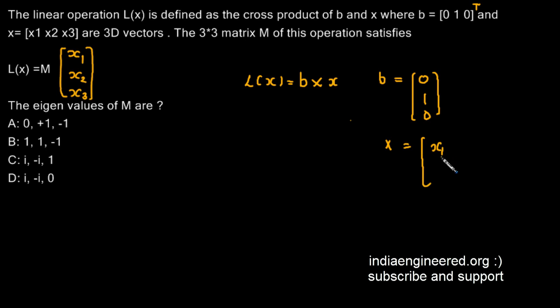And x is the matrix [x1, x2, x3]. Both are three-dimensional vectors. Now we are asked to find out the eigenvalues of the matrix M such that L(x) is equal to the matrix M multiplied by [x1, x2, x3].